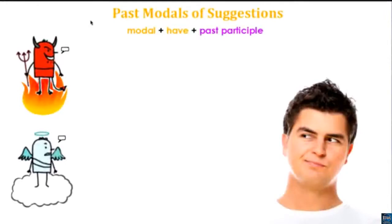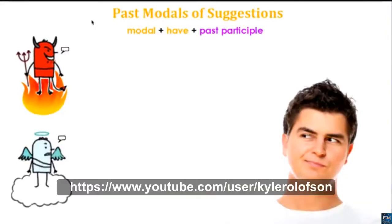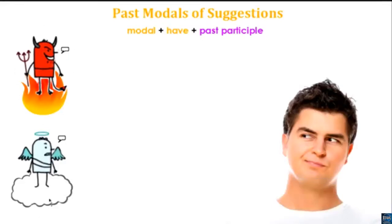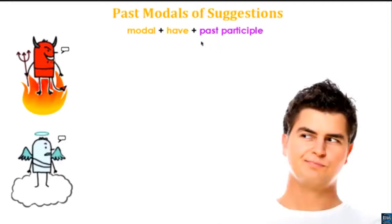After watching the video and listening to that conversation, we're going to look at the grammar for suggestions. We saw the bad side and the good side of his personality, both giving suggestions about things in the past. Past modals: the equation is modal verb + have + past participle as the main verb.